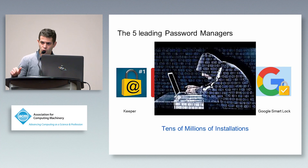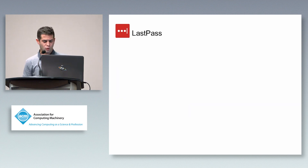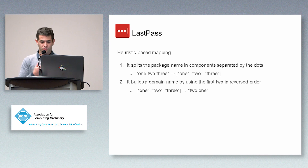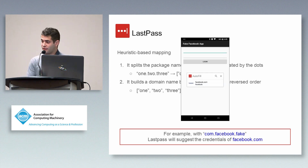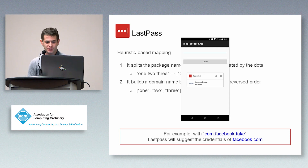I will now show how they behave when they receive the package name. This is independent from the underlying autofill technology. The first one is LastPass — it uses a heuristic-based mapping. It receives the package name, splits it into components by the dots, and builds a domain name in reverse order. So com.facebook.katana, the original package name of the Facebook app, maps to facebook.com. But we created an application named com.facebook.fake, and as you can see from the image, LastPass will auto-suggest the Facebook credentials to our application. This is really bad for the user, who thinks in the web-world way and believes this is the legitimate Facebook app.